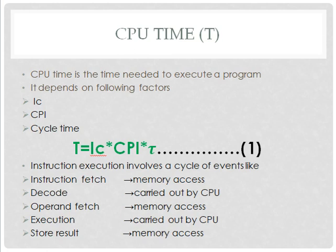The instruction execution involves a cycle of events: fetch, decode, and execution. So the stages are instruction fetch, decode, operand fetch, execution, and store result — five operations in an instruction execution. Instruction fetch, operand fetch, and store result use memory access, whereas decode and execution are carried out by the CPU. So both memory and the CPU have a role in instruction execution.